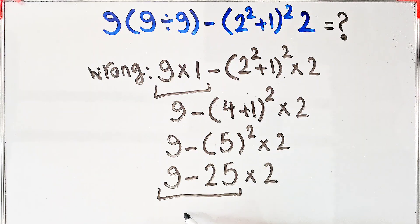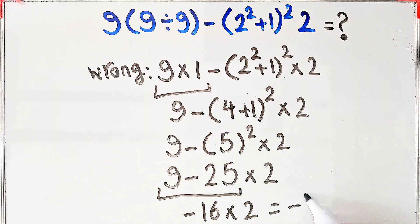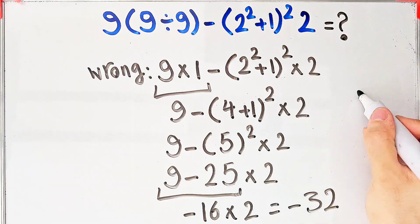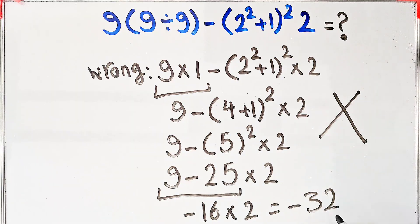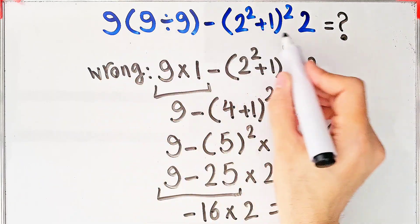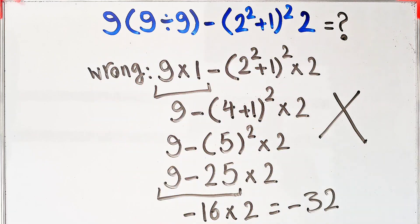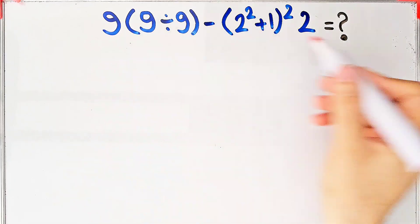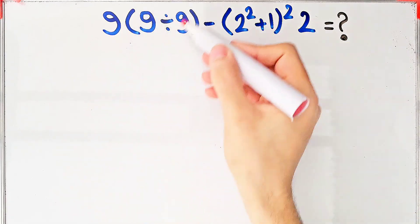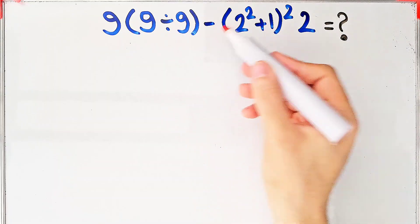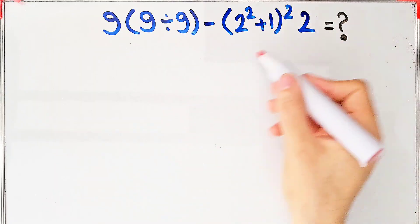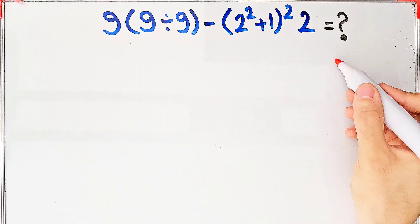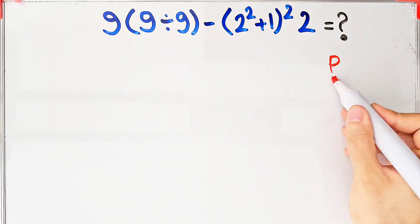Negative sixteen times two equals negative thirty-two. They say the final answer of this question equals negative thirty-two, but this answer is definitely wrong. Let's solve this question step by step together. In this question we have multiplication, parentheses, division, subtraction, exponent, and addition. To solve this question we need to follow the PEMDAS rule.